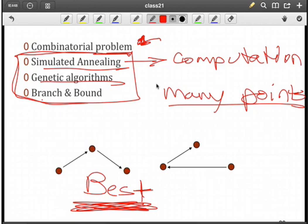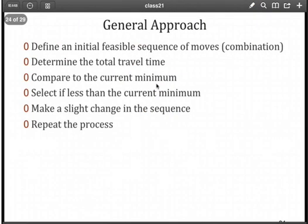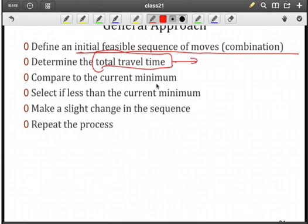The typical approach for these methods are, first, have some initial sequence of moves. By that, we mean some combination of the points that is feasible, and again, no backtracking. Then what we do is determine the total travel time based upon what we already know about the feed rates and the points themselves. We compare the value we get here for the total travel time to the minimum. We're wondering, is this total travel time less than the minimum?